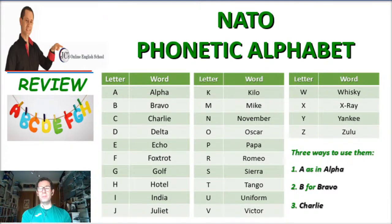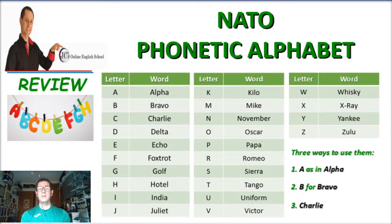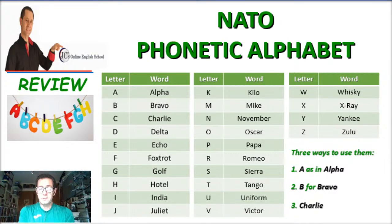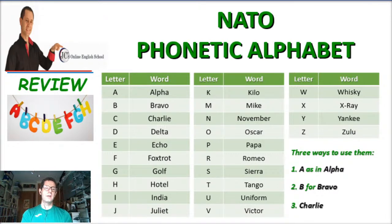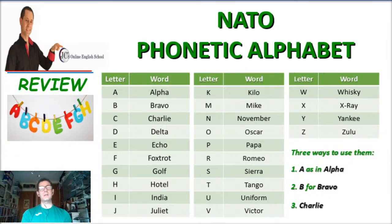Now, the NATO phonetic alphabet — for each letter of the alphabet there is an equivalent word. I personally prefer saying "A as in..." So: A as in Alpha, B as in Bravo, C as in Charlie, D as in Delta, E as in Echo, F as in Foxtrot, G as in Golf, H as in Hotel, I as in India, J as in Juliet.